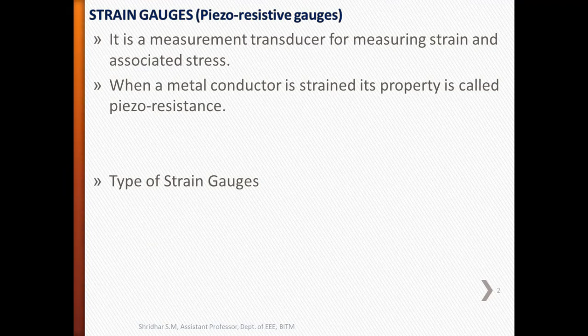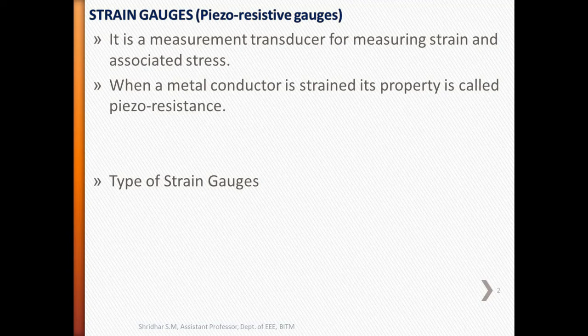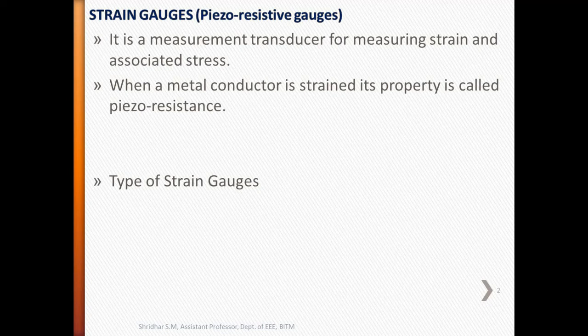Strain gauges are resistance transducers. When a metal conductor is stretched or compressed, its resistance changes on account of both the length and diameter of the conductor changing, and the value of resistivity also changes.